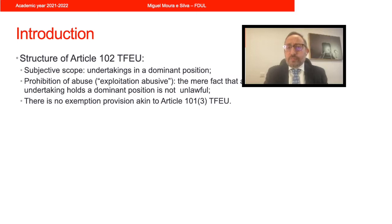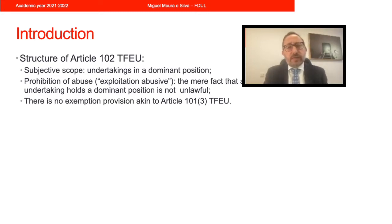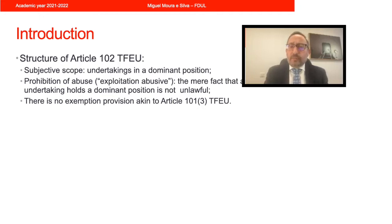Thirdly, there is no exemption provision in Article 102, unlike Article 101 where paragraph 3 allows for the exemption of prohibited agreements provided its requirements are met. So under Article 102, the letter of the law is that there is no exemption, so there's no justified abuse. As we're going to see, this is a point that has been clarified by the Commission and the Court, where they accept some sort of justification that performs a similar role to Article 101 paragraph 3, but we will look at that further on in our course.